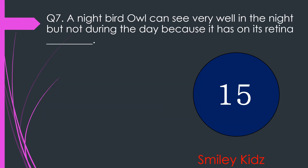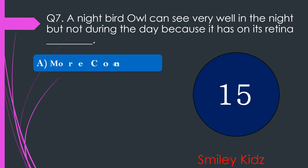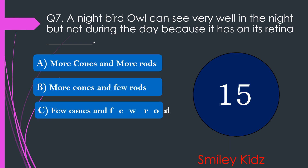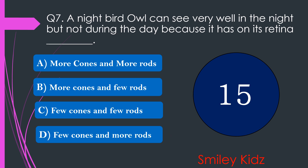Question number 7. A night bird owl can see very well in the night but not during the day because it has on its retina dash. The options are A. More cones and more rods, B. More cones and few rods, C. Few cones and few rods, or D. Few cones and more rods. Your time starts now.